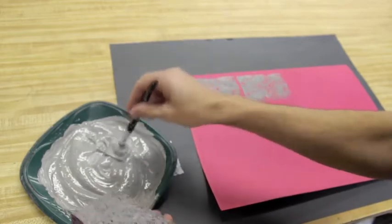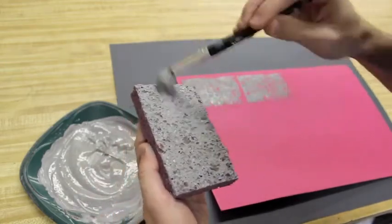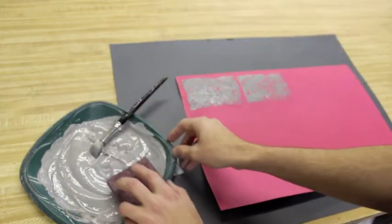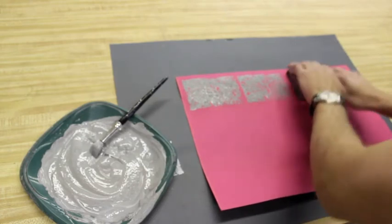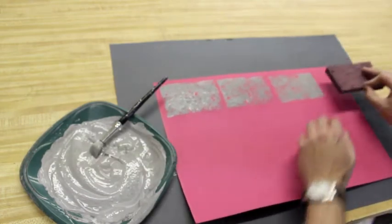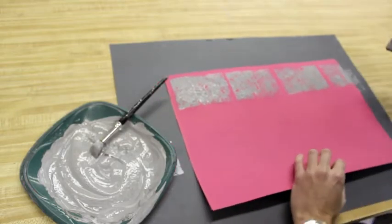Once we start to get the sponge saturated, you're going to be able to get more than one print out of each paint application. At some point you're going to end up going off the paper, which is fine. That's why we have another paper underneath to protect the table.